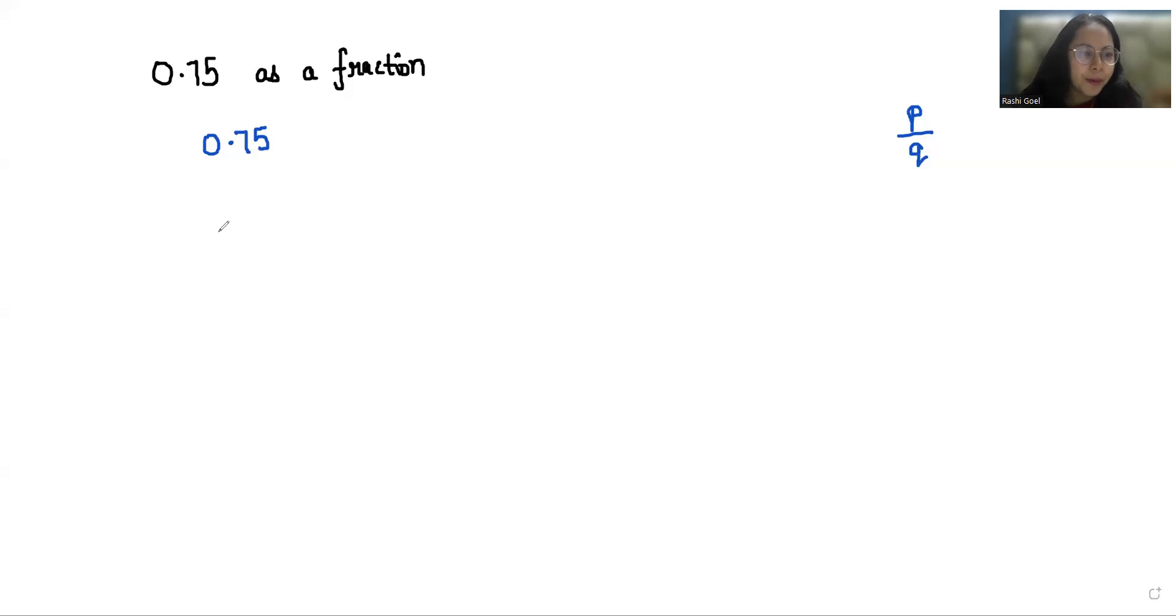To convert 0.75 to p by q form, I'm going to take 1 in the denominator. Now we have to multiply with a number of tens in numerator and denominator depending upon the digits after the decimal.